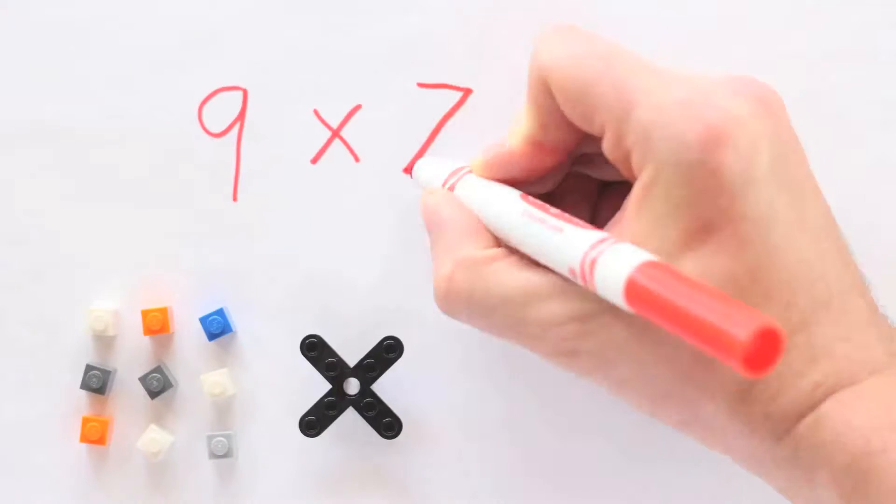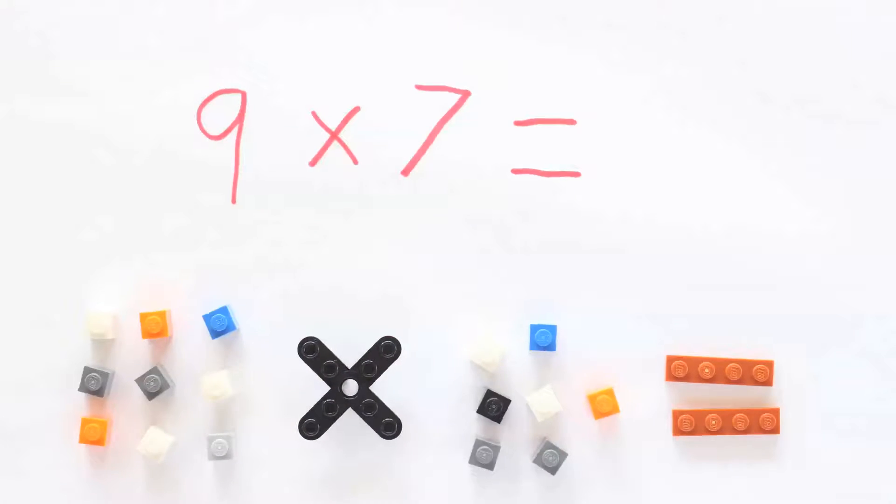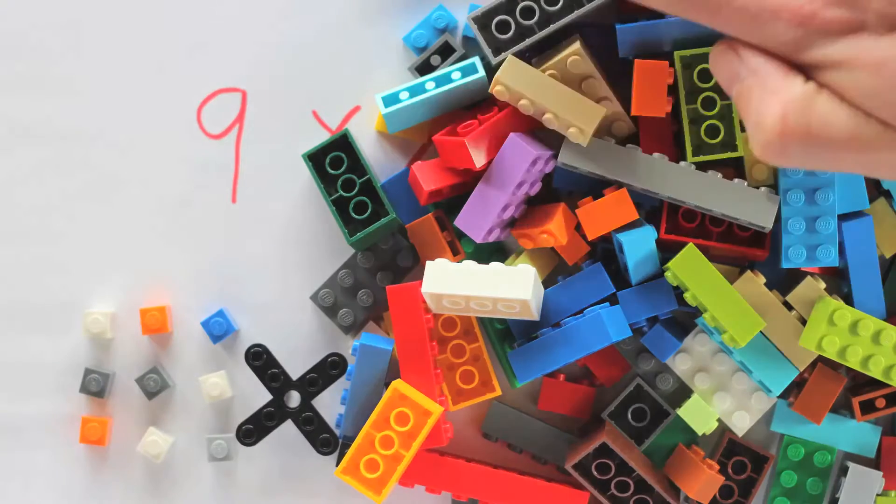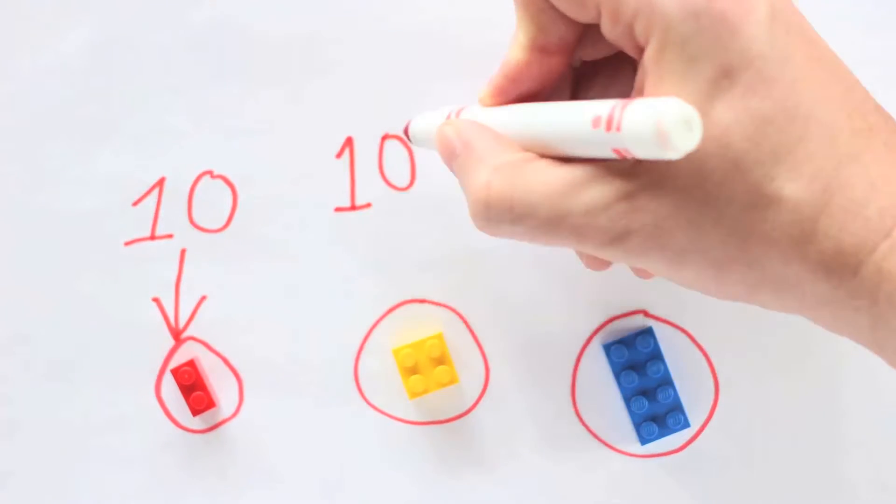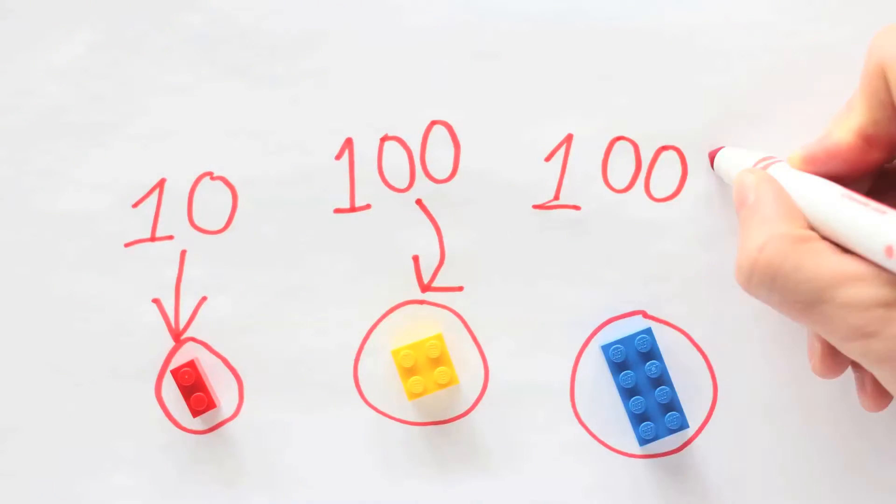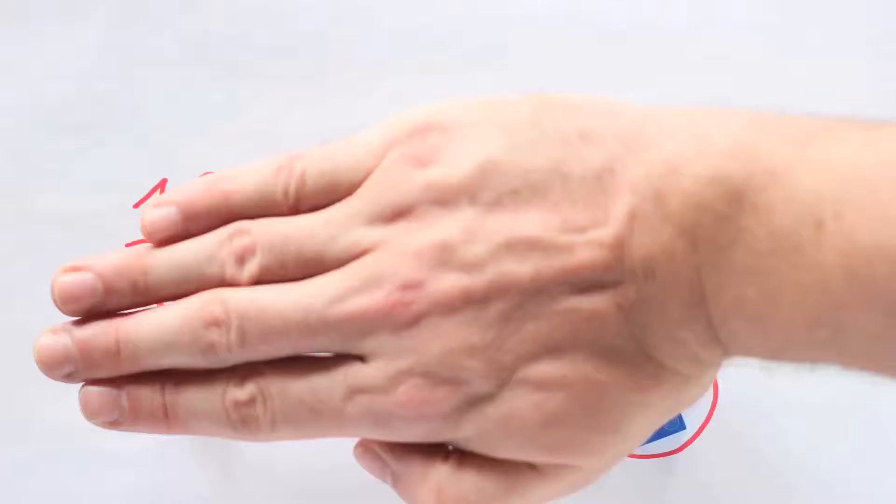When learning to multiply numbers greater than 9, modeling the multiplication using the set model becomes unwieldy. You can model with bricks to help students understand how place value relates to multiplication. This method of modeling helps lead to understanding multiplication through partial products.